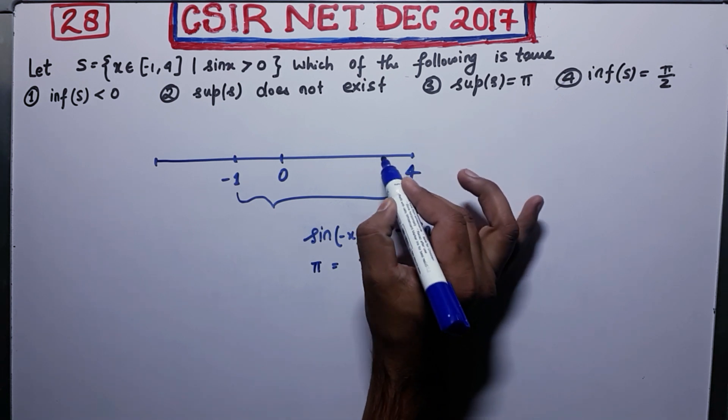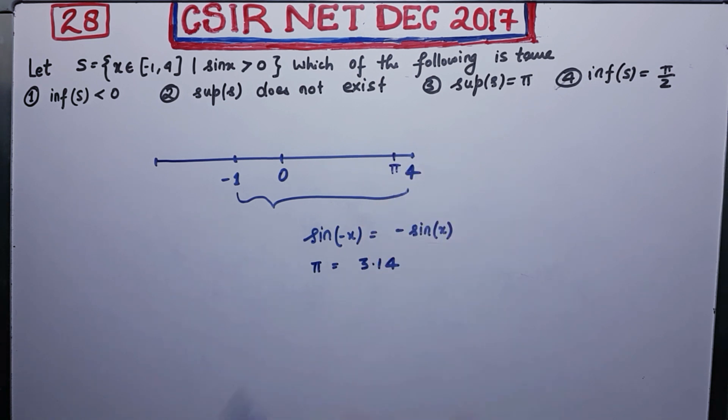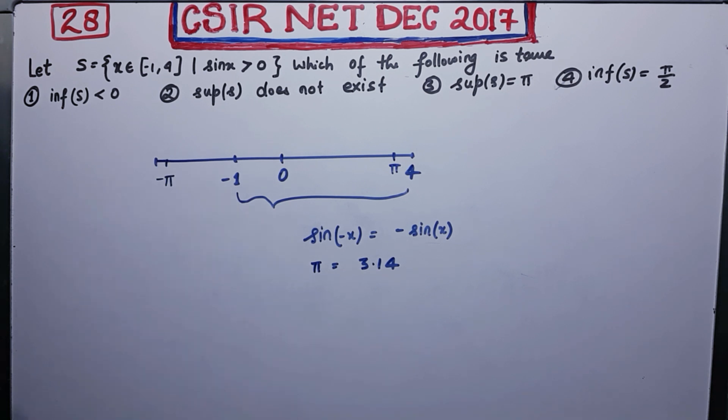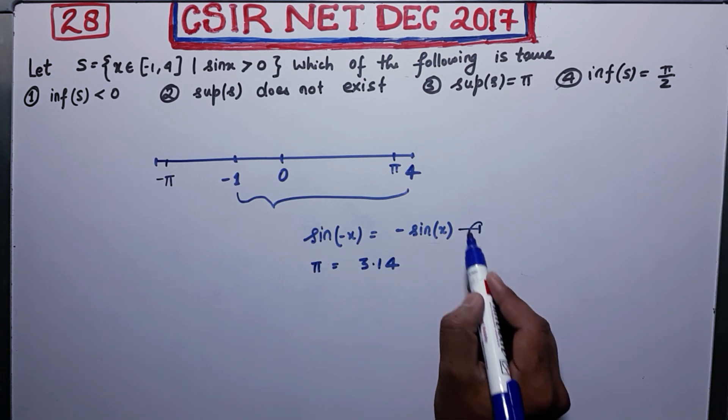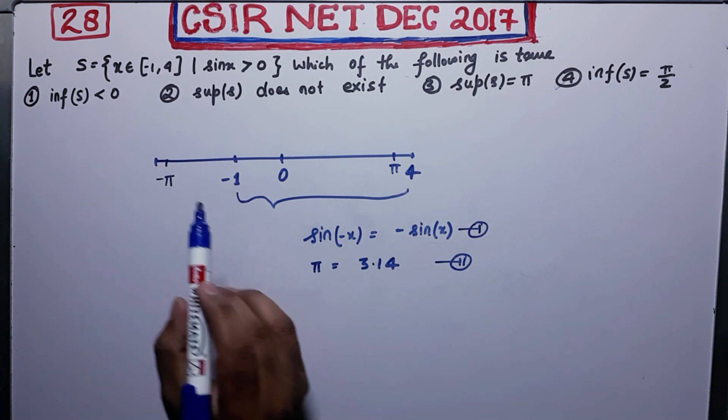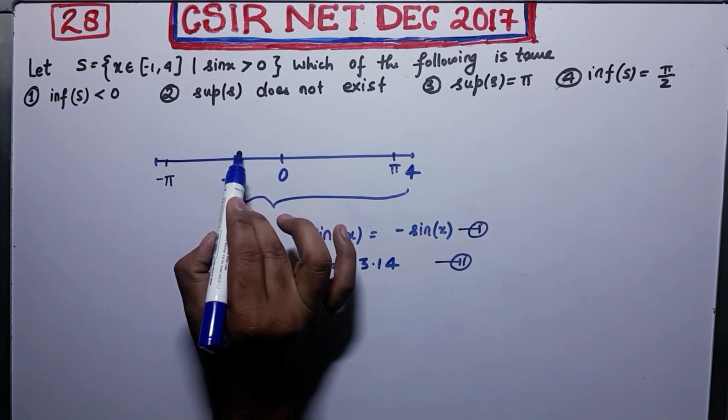Therefore, π must be somewhere here. Now, minus π will be somewhere here. So from this thing and this thing, you can directly say that your element of S cannot belong to this thing.